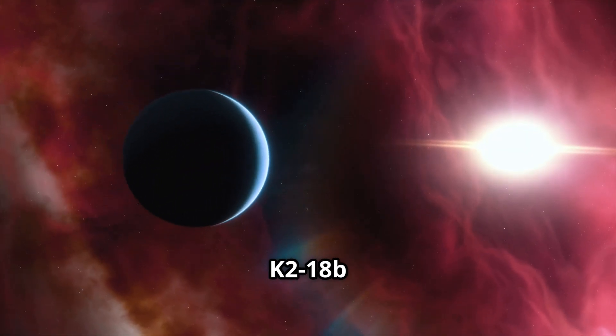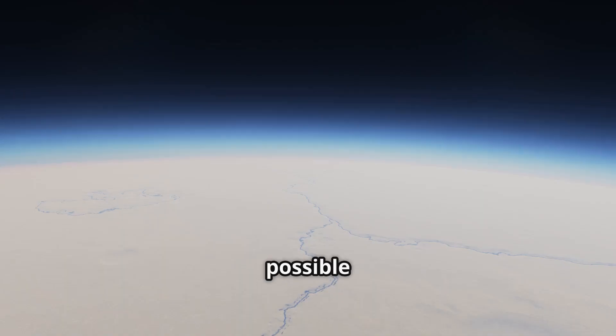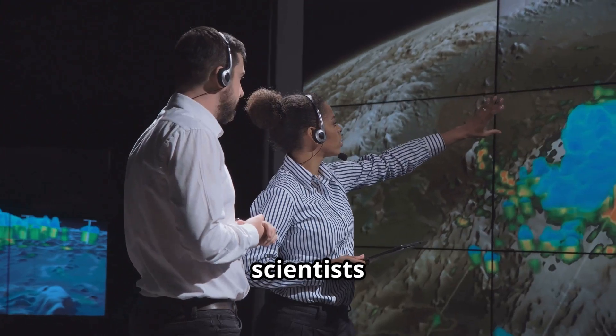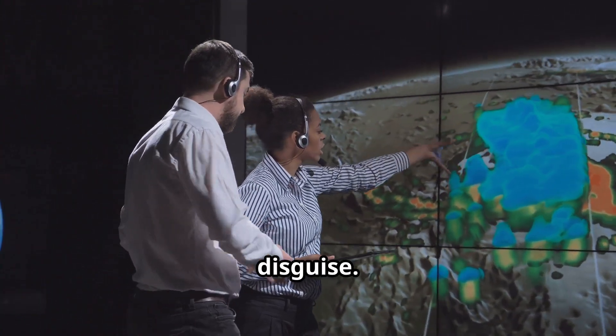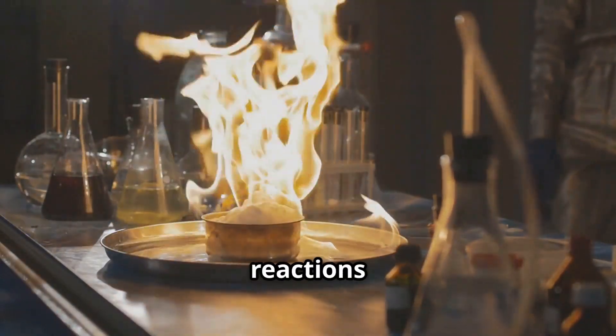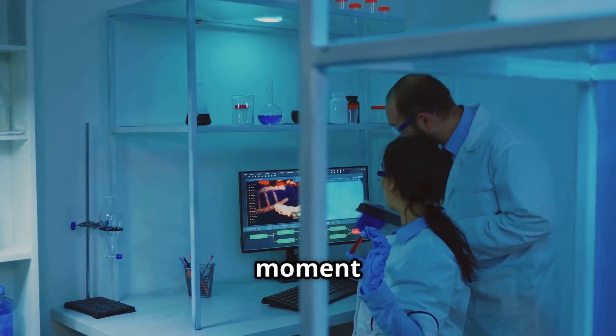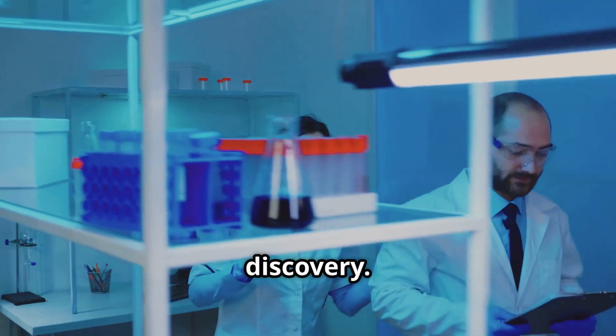But here's the catch. K218b isn't Earth. Its thick hydrogen atmosphere and massive size make it more like a sub-Neptune with a possible high-pressure ice layer or even a superheated ocean. Some scientists think the DMS signal might be noise or just methane in disguise. Others say non-biological processes like chemical reactions in the atmosphere could mimic these gases. We're not at the eureka moment yet. The signal needs to hit five sigma, the gold standard for discovery.